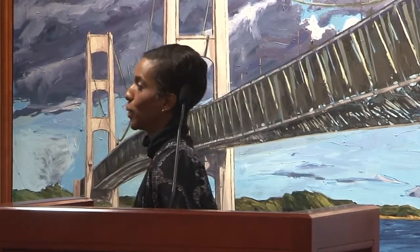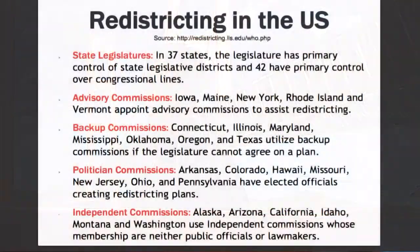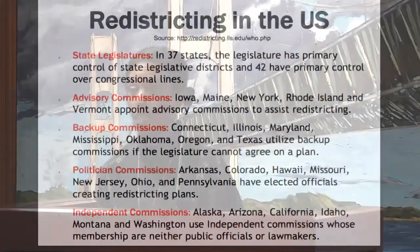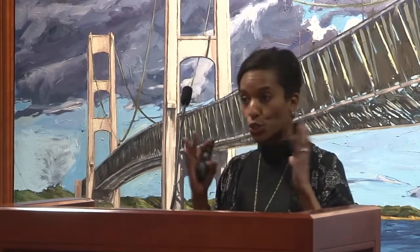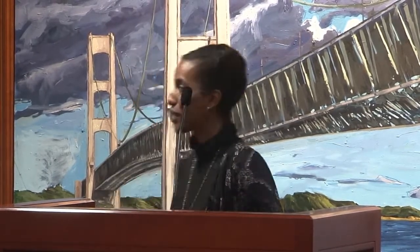In some states, we see backup commissions — used in the event that the state legislature cannot agree on a map or set of maps. We would need to throw this to another body in order to break the tie. As we heard from Richard, that was a problem in the state of Michigan, and we've never really been able to resolve that. We don't have a backup commission.